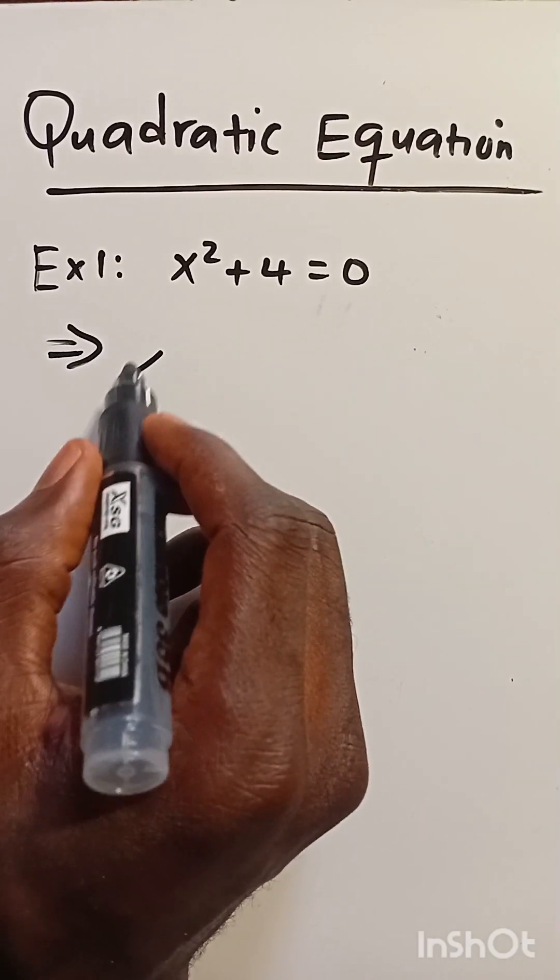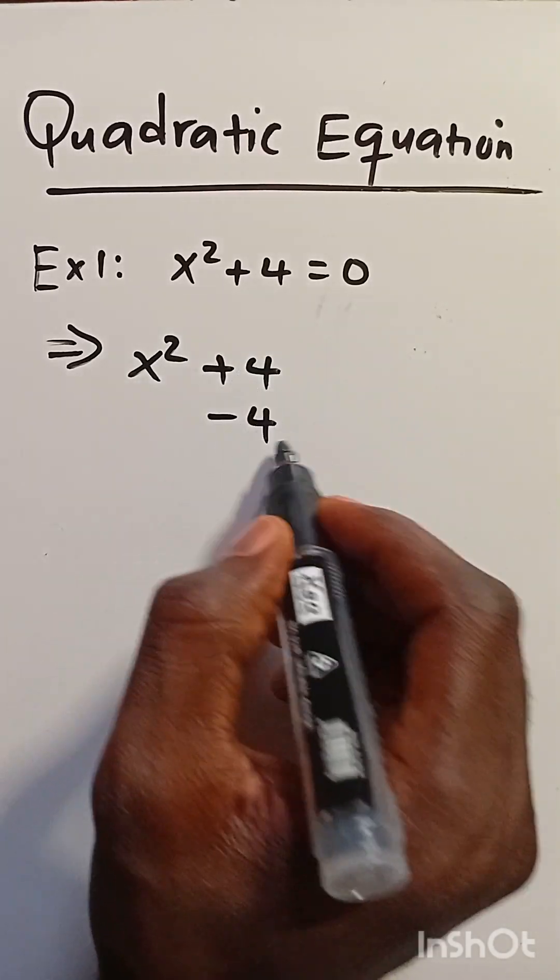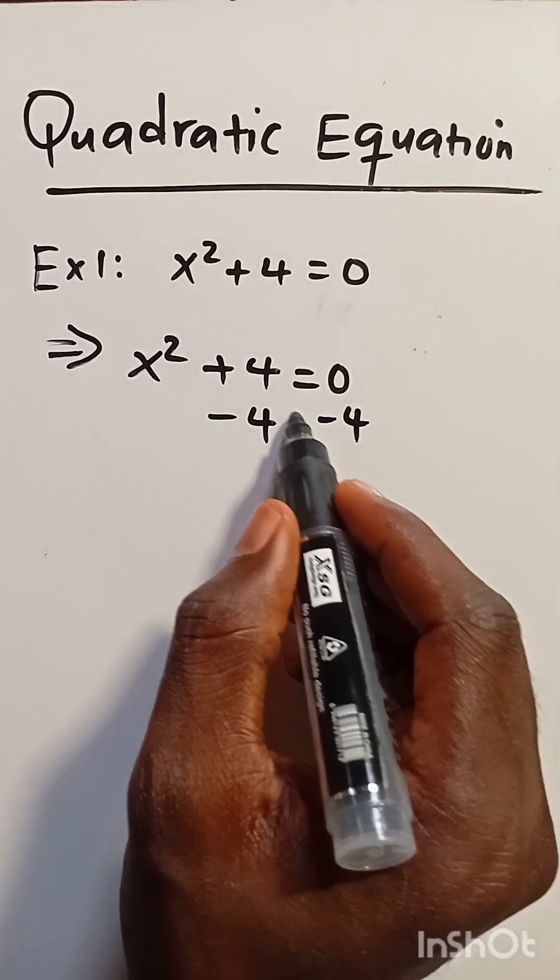This implies we have x squared plus 4. Let's subtract 4 from here, equals 0, then minus 4 from here too.